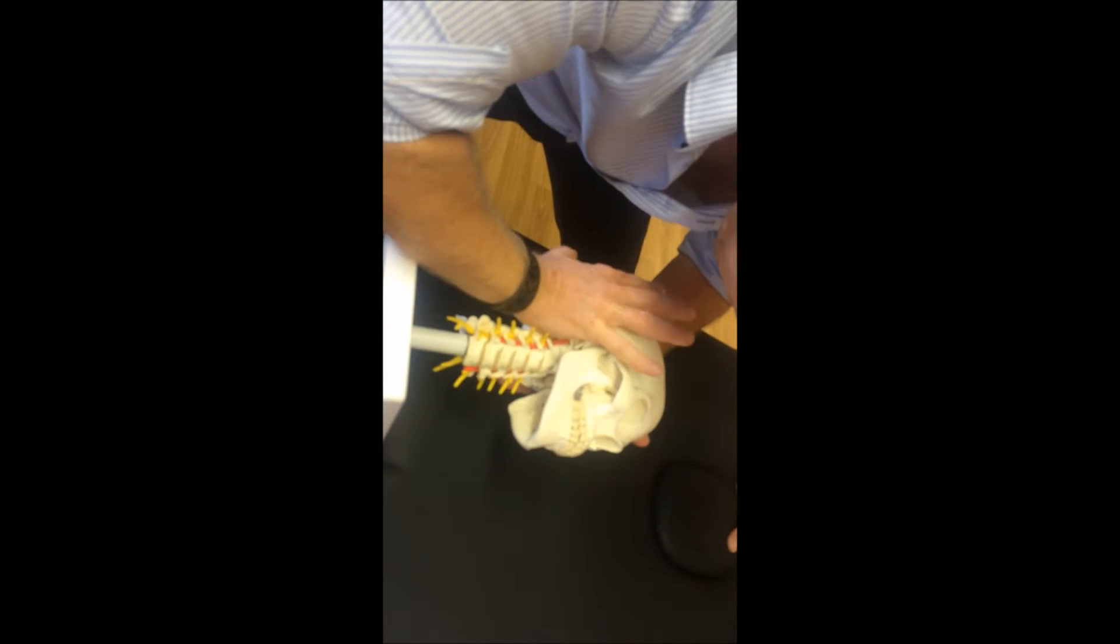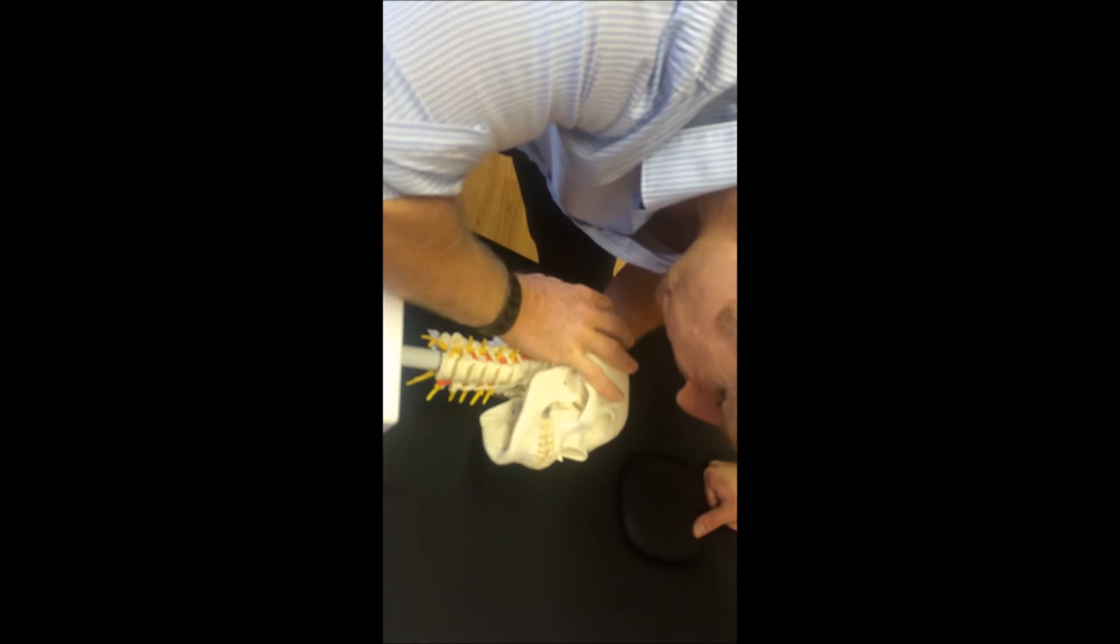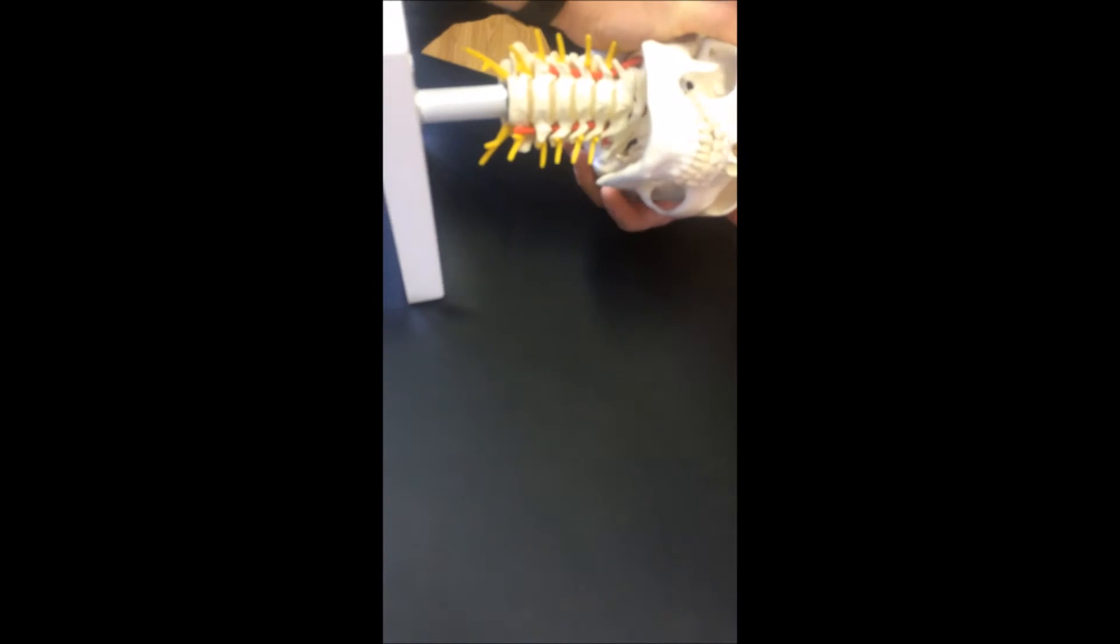So the thrust is almost direct cephalad, but you might find my fingers under the occiput here. Are you overturning with this hand as well or not?